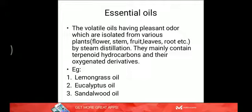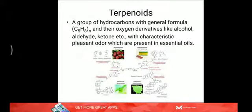The important characteristics of essential oils are that they have very pleasant odor smell, and another thing is that they are isolated from plants by the method called steam distillation. So what are terpenoids? The chemical constituents present in essential oils, and they are a group of hydrocarbons with general formula C5H8 N times and their oxygenated derivatives like alcohol, aldehyde, ketone, etc., with characteristic pleasant odor and they are present in essential oils. A few examples are shown there, various plants, fruits, etc.